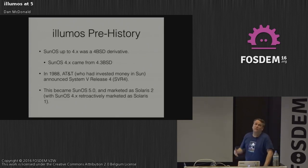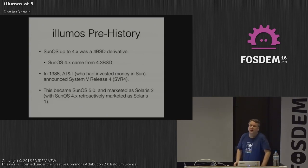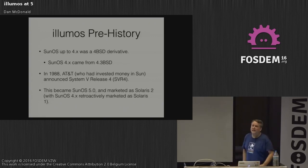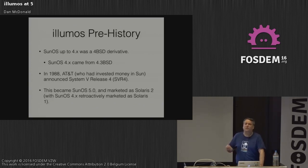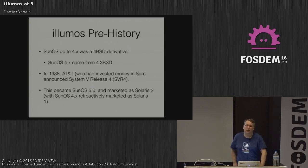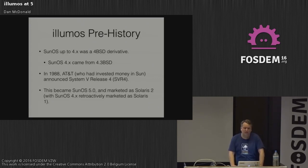Going back a bit to prehistory: Sun Microsystems had SunOS. SunOS versions one through four were derived from various versions of BSD; the last was SunOS 4, derived from 4.3 BSD. In 1988, AT&T, who had invested roughly 20% in Sun, announced System 5 Release 4, which was going to be the one great Unix merging BSD and old System 5. It didn't happen that way, but this eventually became SunOS 5.0, marketed as Solaris 2, with SunOS 4 retroactively renamed Solaris 1.